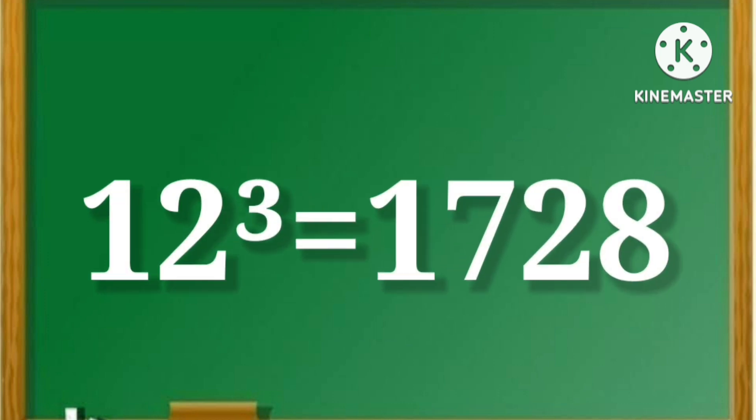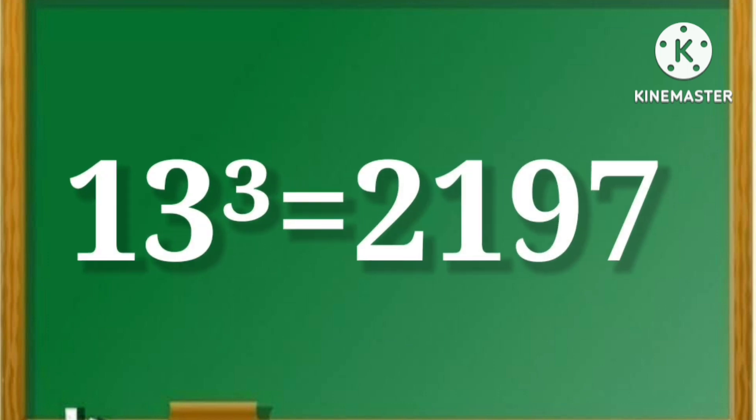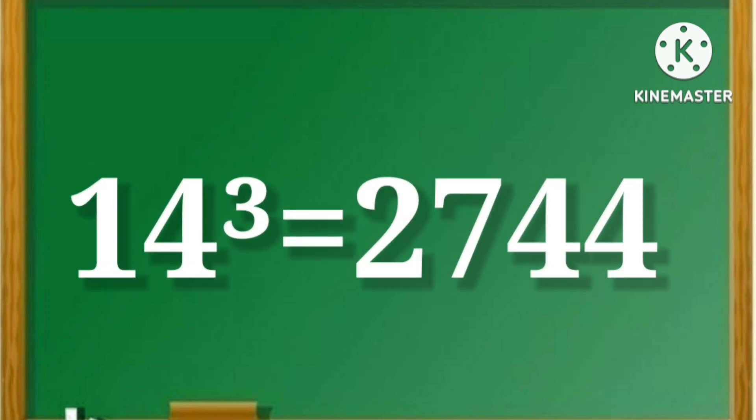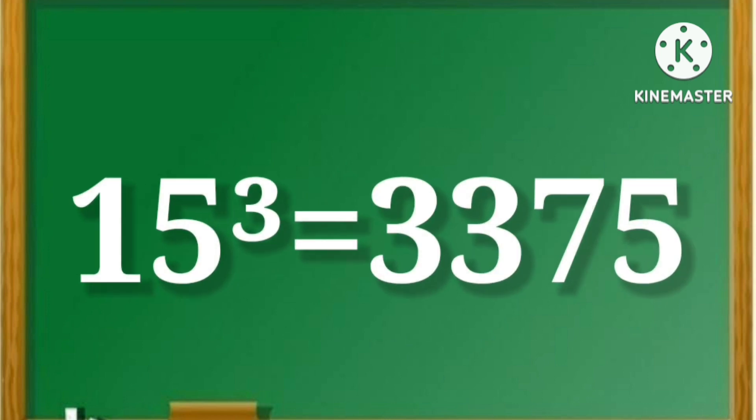13 cube is equal to 2197. 14 cube is equal to 2744. 15 cube is equal to 3375.